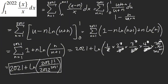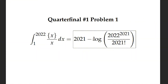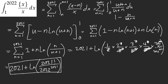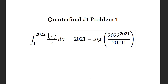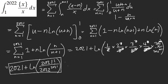That should be our answer: 2021 factorial over 2022 to the power of 2021 inside the logarithm, plus 2021. I think that should be it. Oh — that's the same thing because it's flipped. I didn't realize this is bigger than this, but that's correct. That is the right answer.